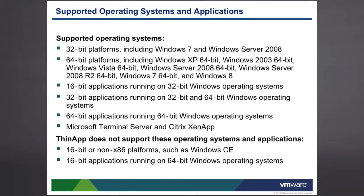The supported operating system applications include 32-bit, 64-bit, and 16-bit platforms. One of the newer features that came out in ThinApp 5 is support for 64-bit applications to run on top of 64-bit Windows operating systems. I can also run it on terminal servers, Citrix XenApp, as well as Vue desktops. However, there are some limitations: ThinApp cannot do 16-bit or non-x86 platforms such as Windows CE, or run 16-bit apps on 64-bit OSes. Most applications today would be either 32-bit or 64-bit and would run on common operating systems.